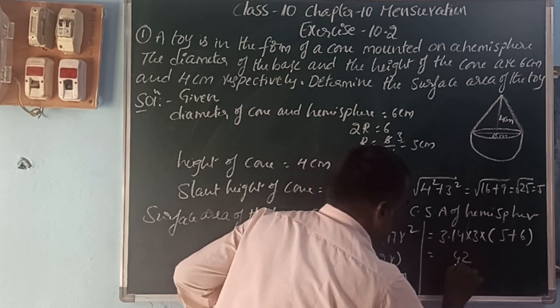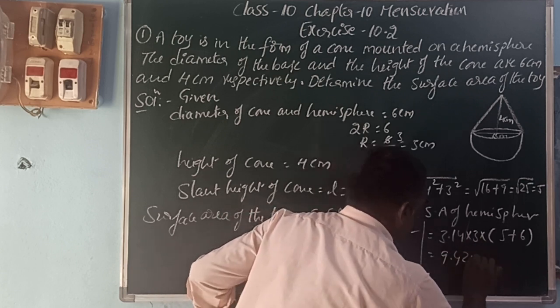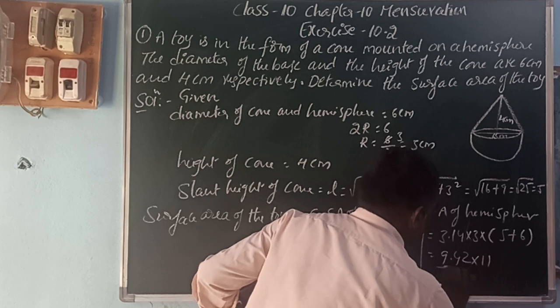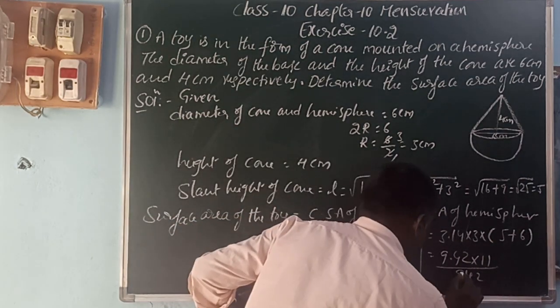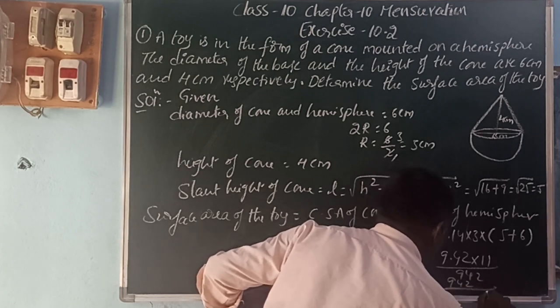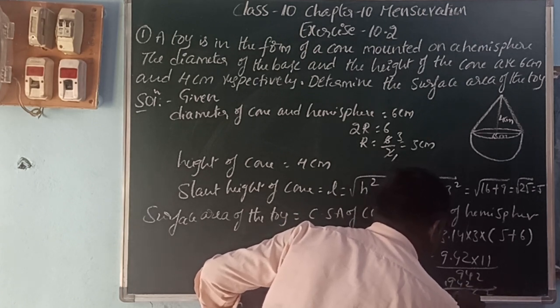That equals 22/7 times 3 into 5 plus 6. So we get 22/7 times 3 times 11 equals 22 times 33 divided by 7.